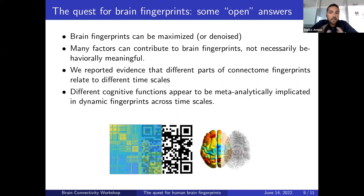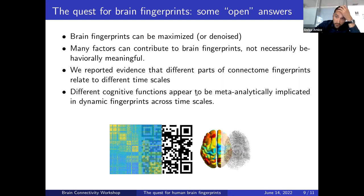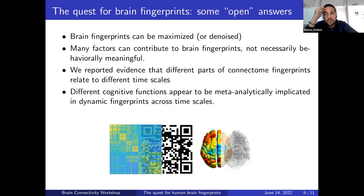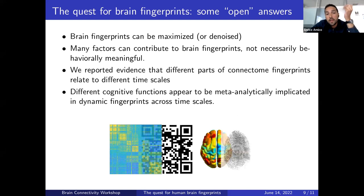As usual, I end with more questions than answers. What I can say is: brain fingerprints can be denoised or maximized, but many factors can contribute to fingerprints that are not necessarily behaviorally meaningful. I want to stress this — not everything that is identifiable is good for behavioral analysis. You should always carefully assess your sources of confound; for instance, an individualized motion response in the scanner can be a stable fingerprint without being behavior-related. That said, this study provides meta-analytic evidence that different parts of connectome fingerprints relate to different time scales and different cognitive functions.